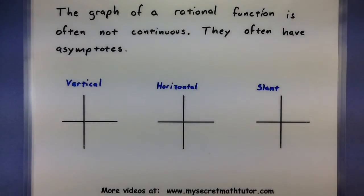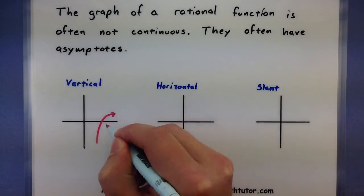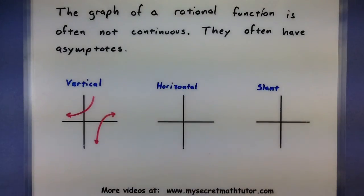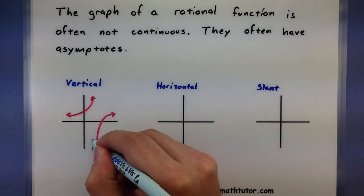Suppose I'm looking at my rational function and I graph it and it turns out something like this. Now this vertical asymptote would run straight up and down right about here.